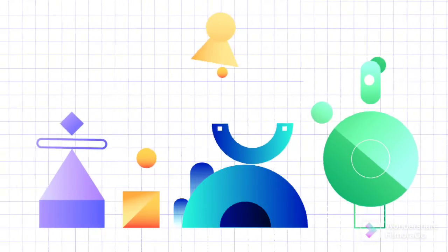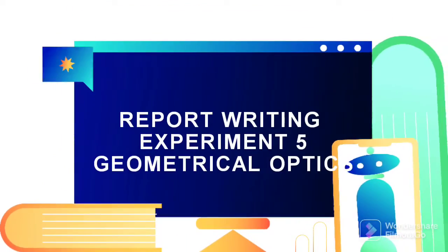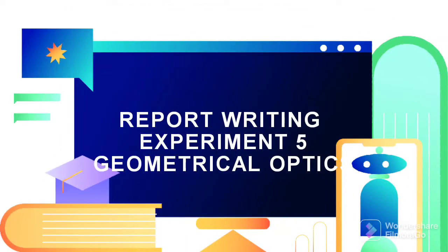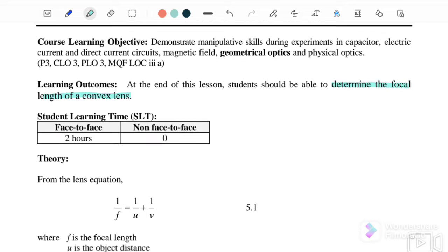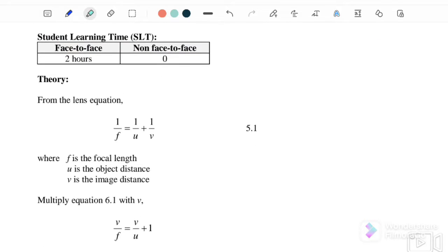Hello, welcome back to my channel. Today we will discuss report writing for Experiment 5: Geometrical Optics. The learning outcome is that at the end of this lesson, students should be able to determine the focal length of a convex lens. From the theory we know that...